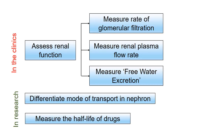Listed here are a number of the functions of renal clearance. It is used to assess renal function in the clinics by measuring the rate of glomerular filtration. You can measure the renal plasma flow rate, and also something called free water excretion. In research, clearance of certain markers can differentiate the mode of transport in the nephron, and especially in pharmacology, it can be used to measure the half-life of drugs.